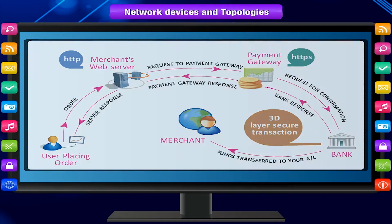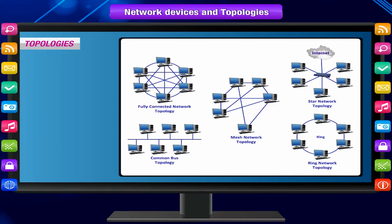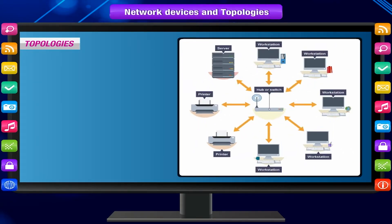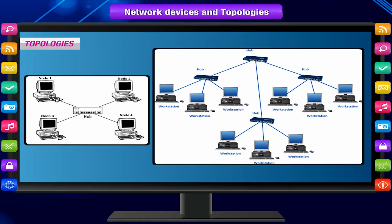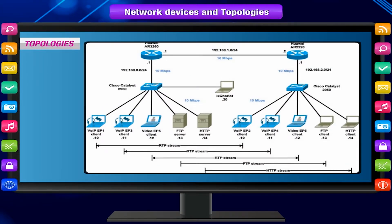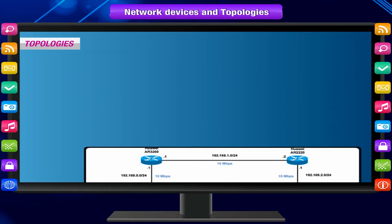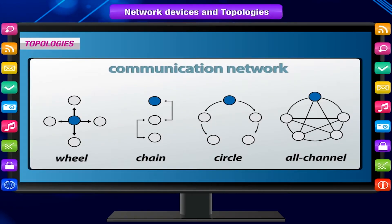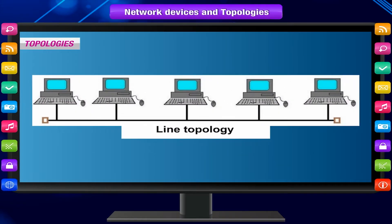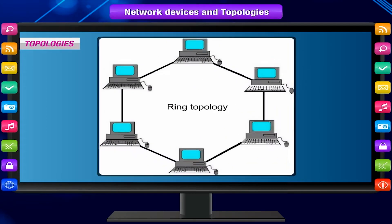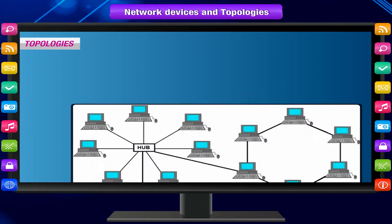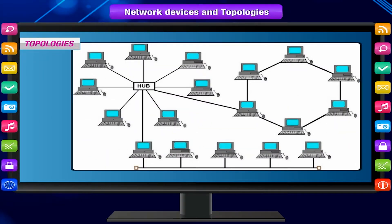A network uses an appropriate topology to arrange hardware devices using the media. The shape of a network and the relationship between nodes is known as network topology, which determines what functions the network can perform and the quality of communication between nodes. Common topologies include line, bus, star, tree, ring, mesh, and hybrid topology. Among these, star topology and ring topology are most popular today.